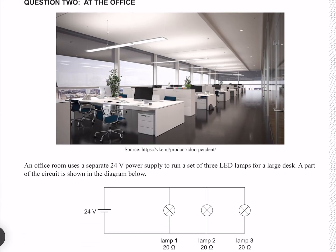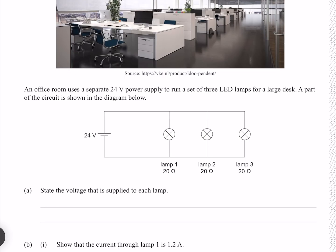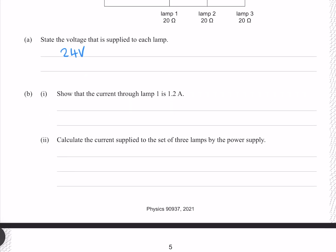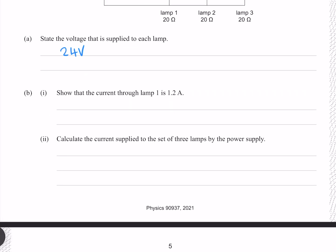Question two: an office room uses a separate 24-volt power supply to run a set of three LED lamps for a large desk. A part of the circuit is shown in the diagram below. State the voltage supplied to each lamp. Since our lamps are wired in parallel with our 24-volt supply, they each receive 24 volts.